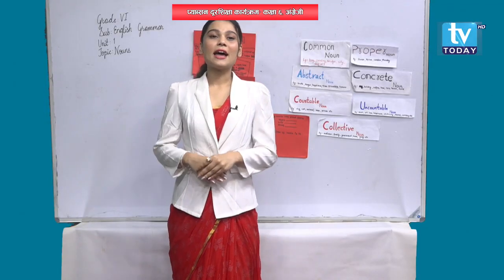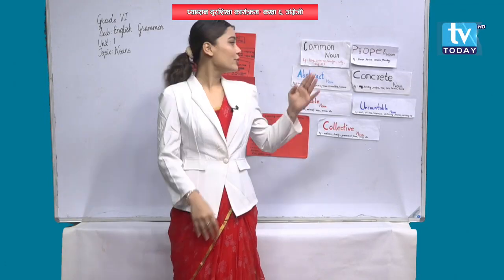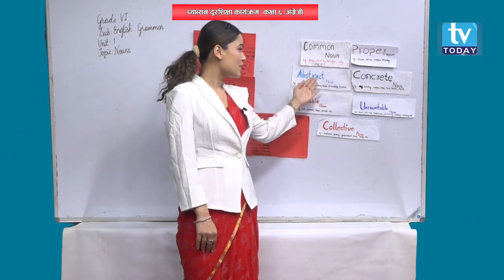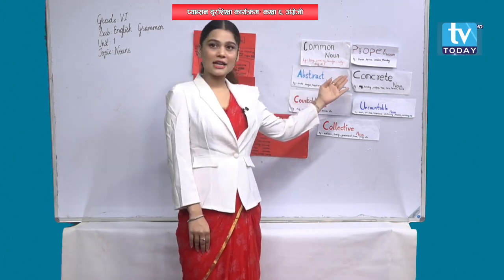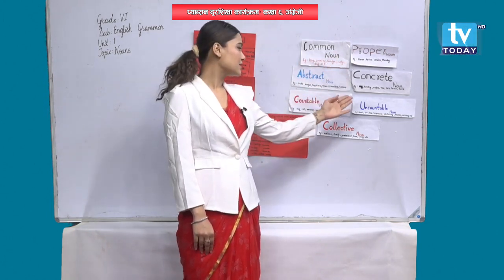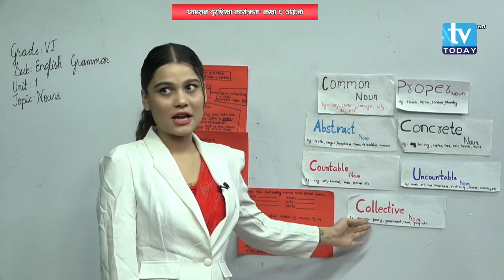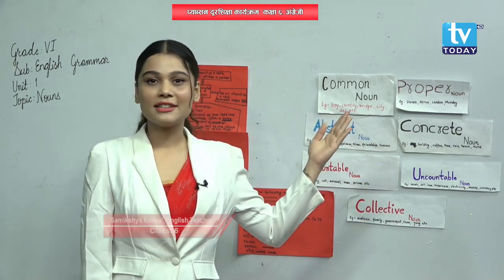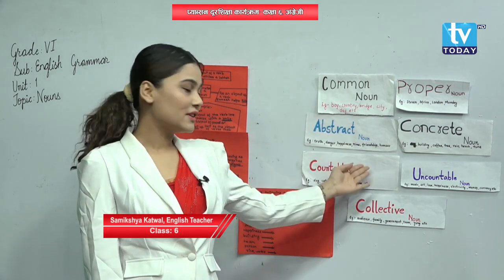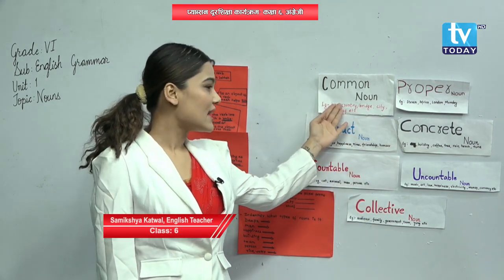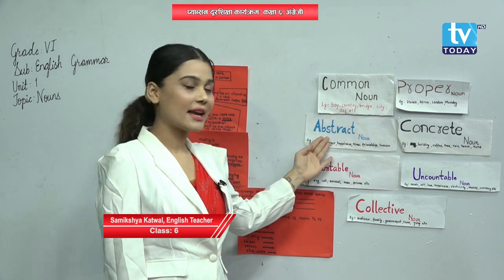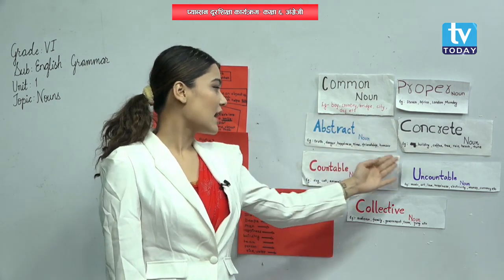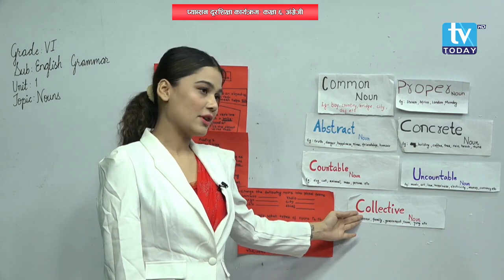There are various types of nouns. That is common noun, proper noun, abstract noun, concrete noun, countable noun, uncountable noun, and collective noun. How many types of noun are there? There are seven types of noun.